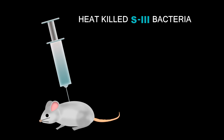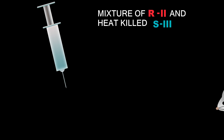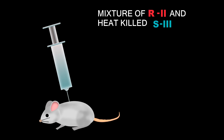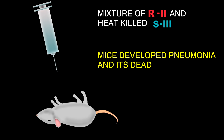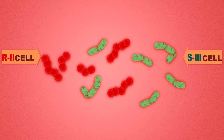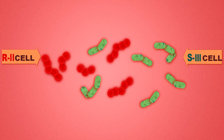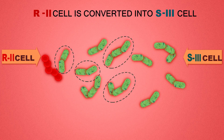When R2 bacteria were injected into mice, the mice suffered no illness because R2 strain was not pathogenic. Then Griffith injected heat-killed S3 bacteria into mice and saw that they didn't suffer from pneumonia. Lastly, a mixture of R2 and heat-killed S3 were injected into mice — the mice developed pneumonia and died. Post-mortem of the dead mice revealed both living R2 and living S3 strains of bacteria.